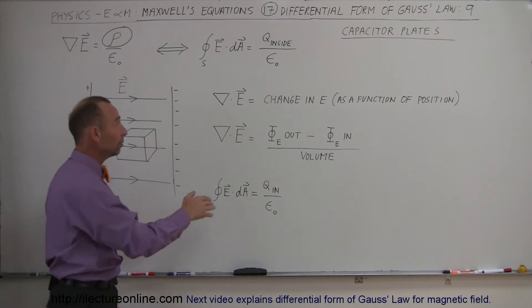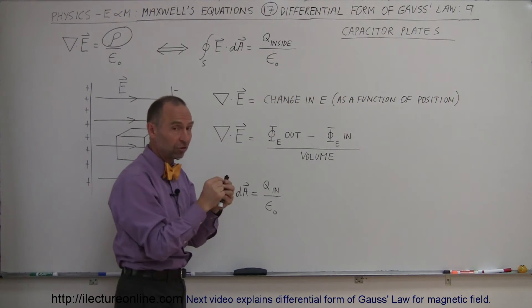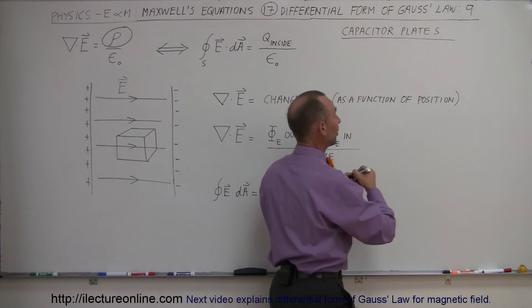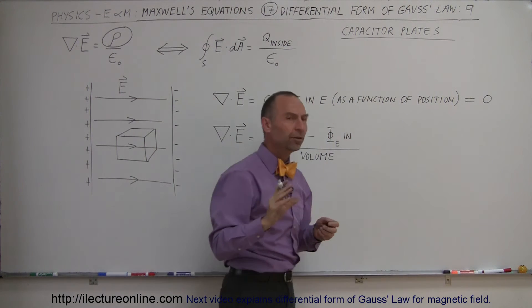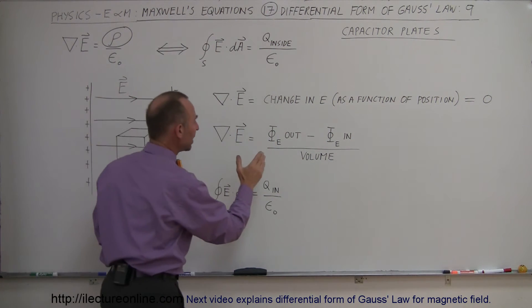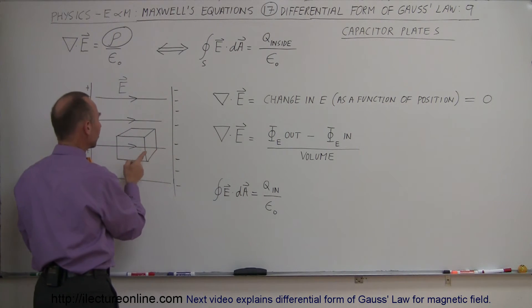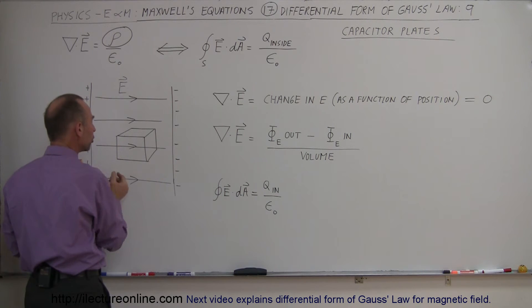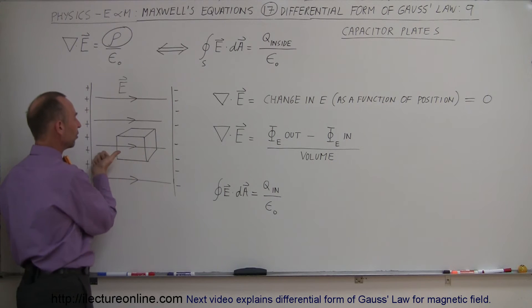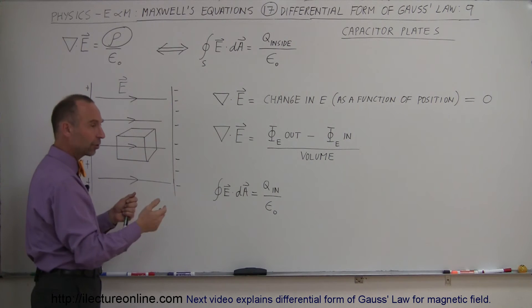That would indeed be the case because the divergence of the electric field indicates a change in the electric field as a function of position — not as a function of time, but as a function of position — and that necessarily has to be zero. Another way of looking at the divergence of the electric field is that it equals the electric flux coming out of an imaginary cube inside the field minus the electric flux going into the cube, divided by the volume of the cube. But if the field doesn't change, whatever flux goes into the cube has to equal the amount of flux that comes out of the cube.